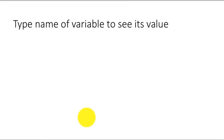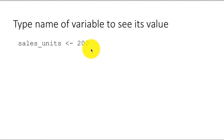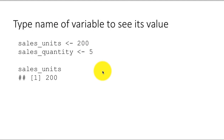Now suppose you have a variable and you want to see its value. There are two ways in which you can see the value. One thing is in R Studio — the right-hand side top pane has a tab called Environment. You can always go to the Environment tab and you will be able to see all the variables and their values. Or alternately, you could just type the name of the variable and you will see the value. So for example, suppose we have said sales_units is assigned the value 200 and sales_quantity is assigned the value 5. Then we type sales_units and the system will come back and show us that the value is 200.